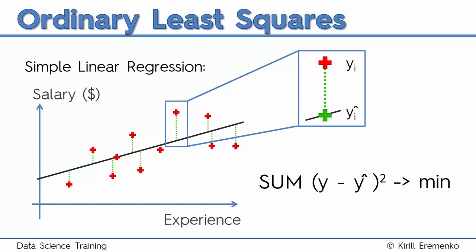It looks for the minimum sum of squares. It finds the line which has the smallest sum of squares possible, and that line will be the best fitting line. That is called the ordinary least squares method.